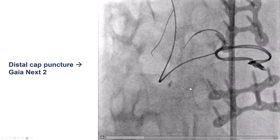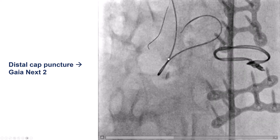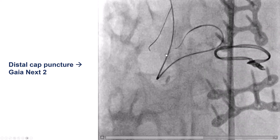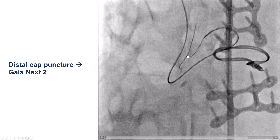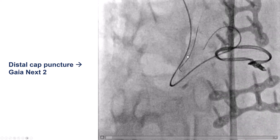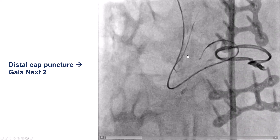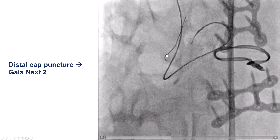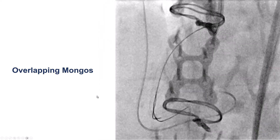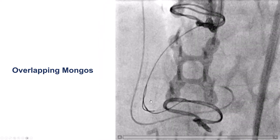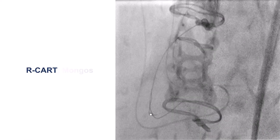We then tried to puncture the distal cap using the Gaia NX2 guide wire. The distal caps can be resistant, but typically they are less so than the proximal cap, because often they are not exposed to fully systemic pressure after the vein graft is occluded. We were then able to advance a polymer-jacketed Gladius Mongo wire antegrade, now having overlap of the wires in the distal RCA.